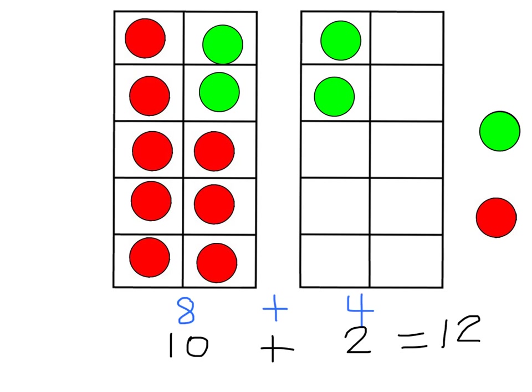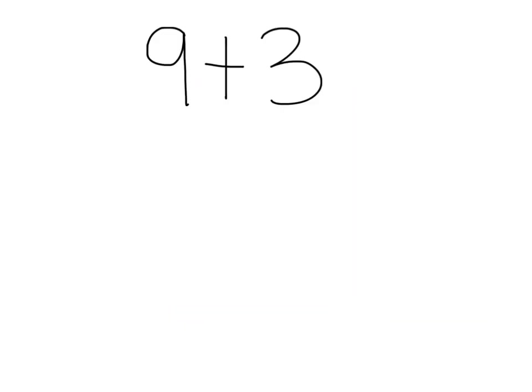Again, we want students to notice that 8 plus 4 is the same as 10 plus 2. After students have had many opportunities to use this strategy with concrete materials and pictures, the next step is to gradually have students visualize making 10 and moving the parts around — we call this abstract. This is an abstract number sentence where we just have numbers and symbols and no manipulatives or pictures. This is where those addition facts that make 10 need to be recalled quickly, and students need to be able to visualize what numbers go together to make 10.